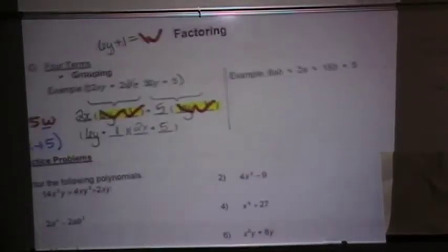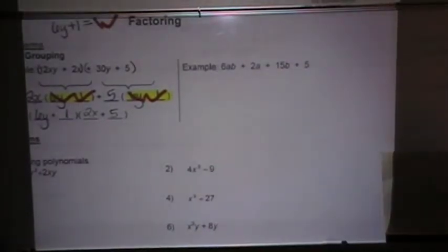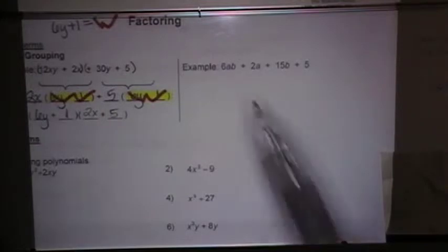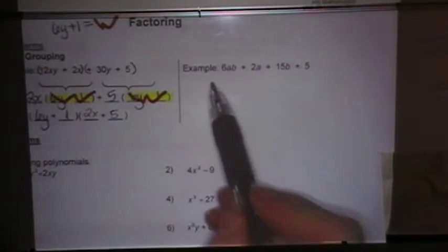All right, so let's try again on this example. I ask myself, is there a GCF? Remember, you always have to ask yourself that first. So I check all 4 of my terms, and there isn't anything that will go into all 4.